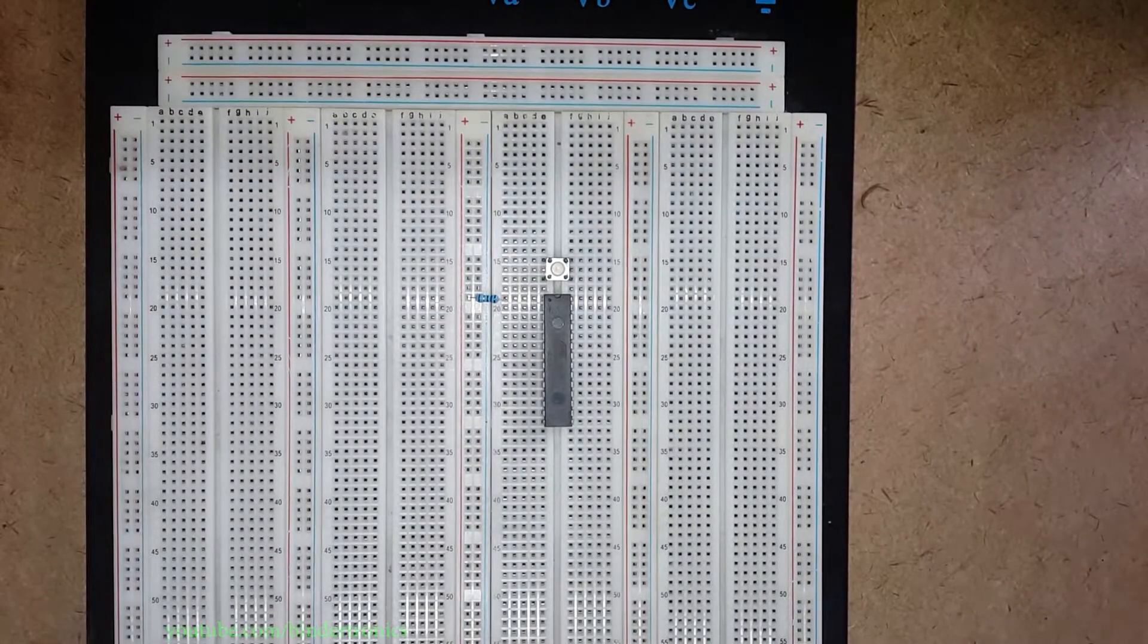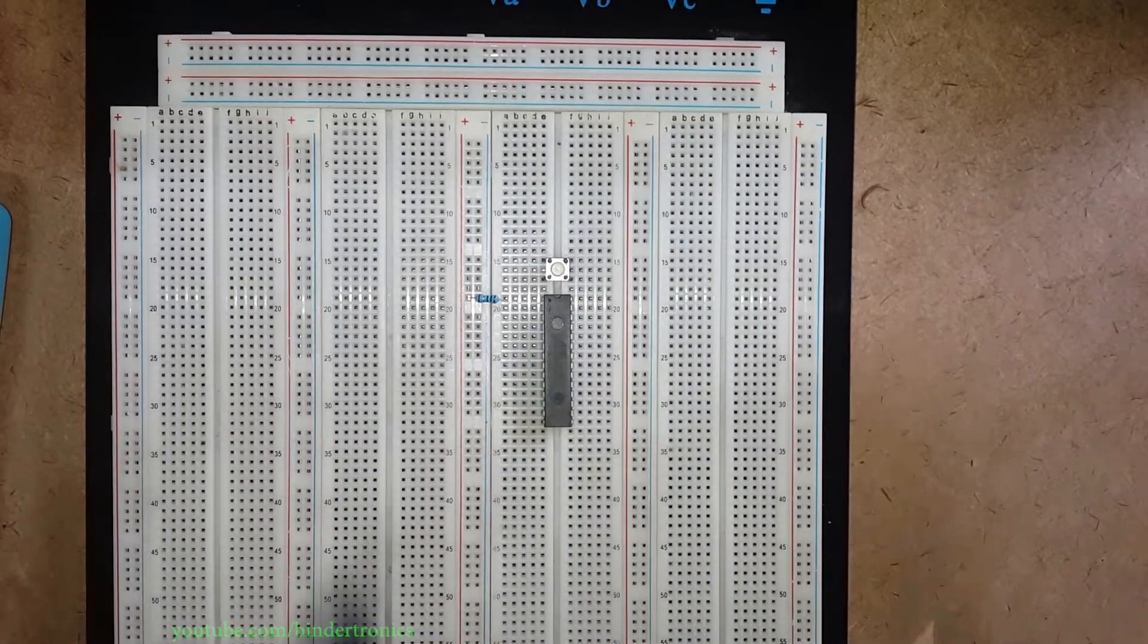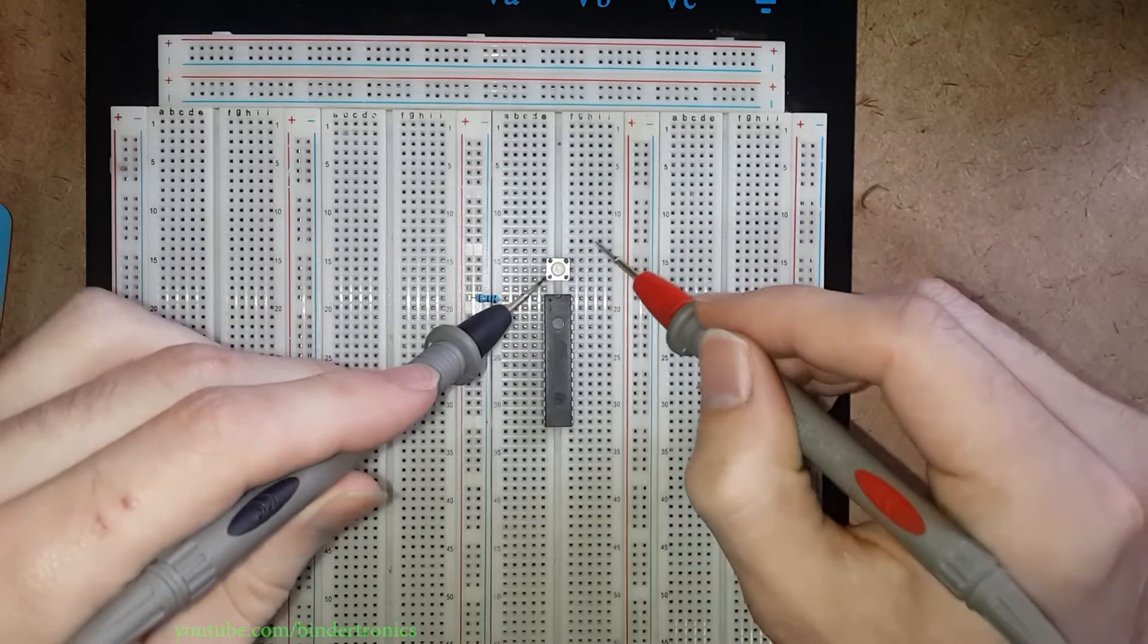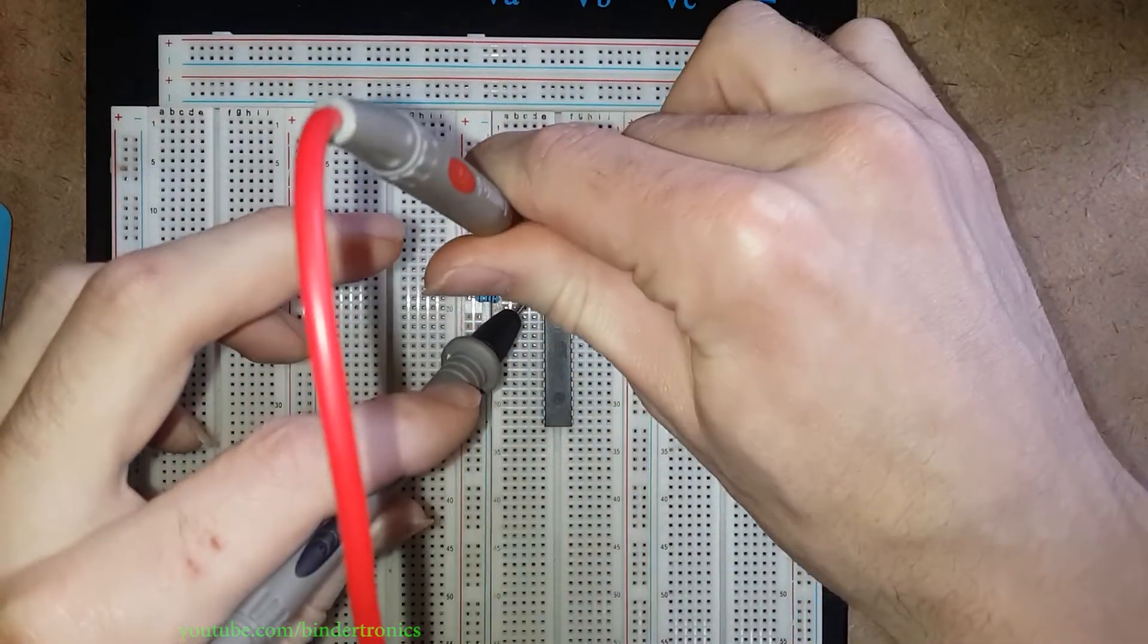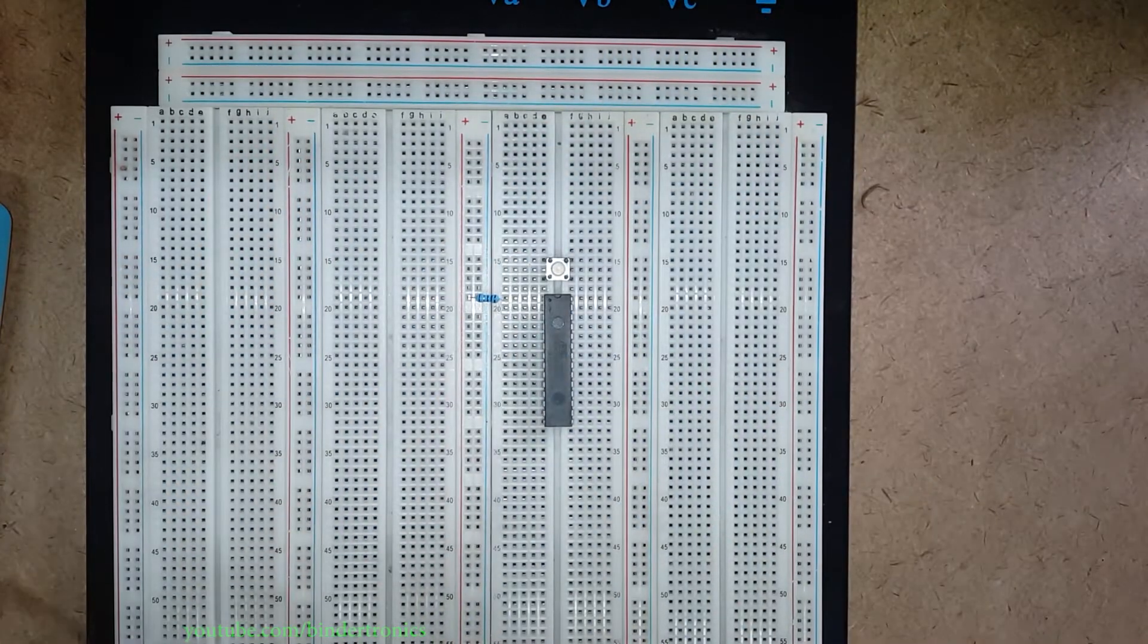We quickly check that with the multimeter just to make sure I have it the correct way around. Okay continuity this way. And when I press it we have continuity.